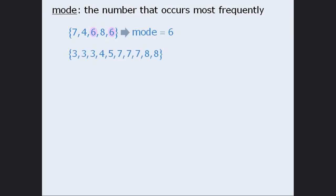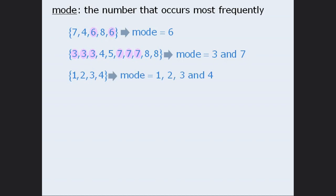In this set of numbers, we have a tie for the most frequently occurring number. The 3s occur three times and the 7s occur three times, so the mode here is 3 and 7. Finally, in this set, each number occurs once, so the mode here is 1, 2, 3, and 4.